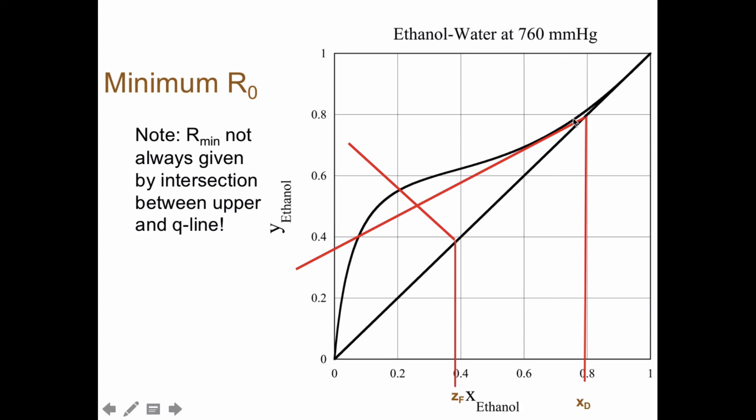So here you get an infinite number of equilibrium stages for a larger reflux ratio than if you would have drawn it through here. So if you try to draw it through the intersection here, then you end up with an operating line that goes on the wrong side of the system curve and that's not allowed.